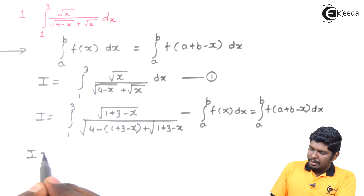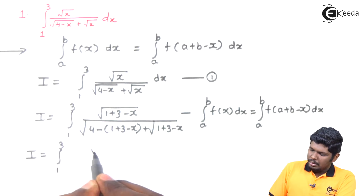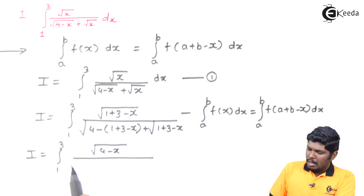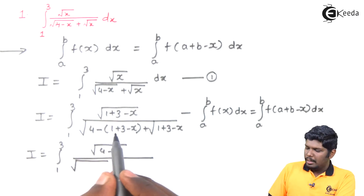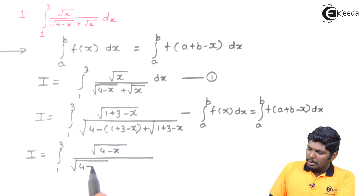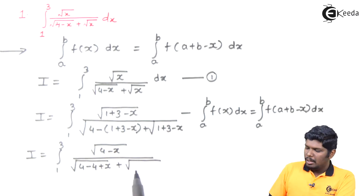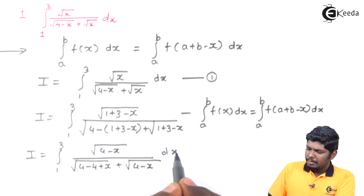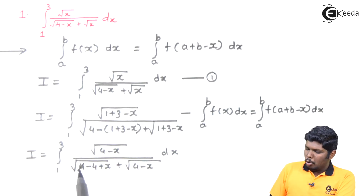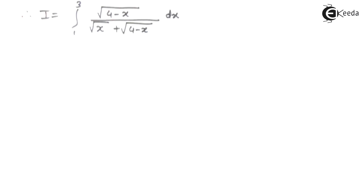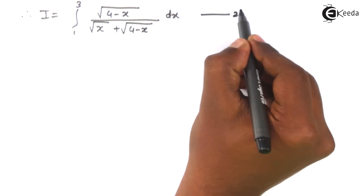Now let us see the change. i equals integral 1 to 3 of under root (4 minus x) over under root of (1 plus 3 minus x) — opening the bracket we have 4 minus x, and minus of minus gives plus x — plus under root (1 plus 3 minus x). On further solving, 4 minus 4 cancels, and the remaining part is integral 1 to 3 of under root (4 minus x) over (under root x plus under root (4 minus x)) dx. Consider this as equation number 2.